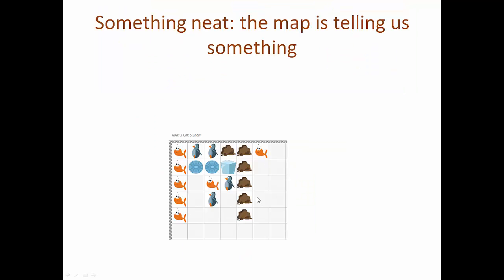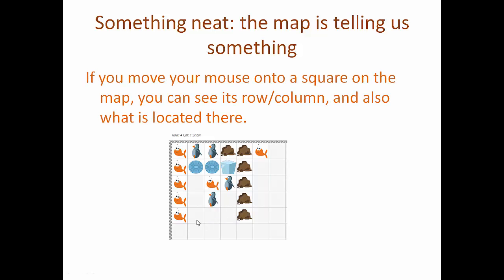Now looking back to the original Penji map, we can see something cool happening. As you mouse over a tile, you can see its location in rows and columns, and also what's contained there.